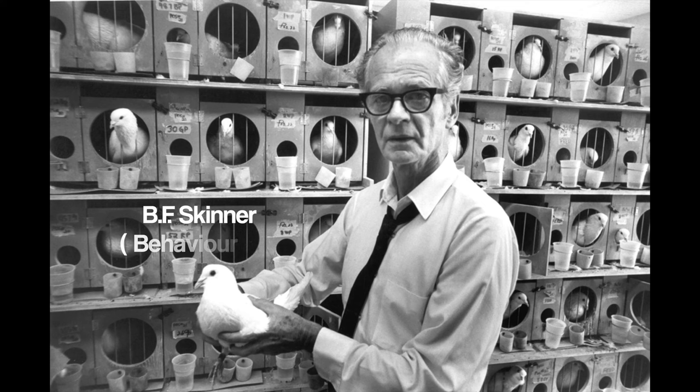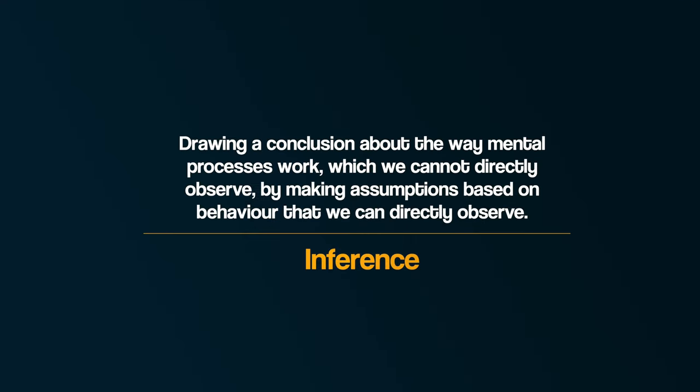Behavioural psychologists such as BF Skinner argued that because our mental processes are not something that can be directly observed, then we cannot study them scientifically. However, the cognitive approach, which developed in the 1960s as a response to the behaviourist's failure to acknowledge mental processes, argued that mental processes can and should be studied scientifically. They argue that this can be done indirectly using inferences. An inference is drawing a conclusion about the way mental processes work, which we cannot directly observe, by making assumptions based on behaviour that we can directly observe.